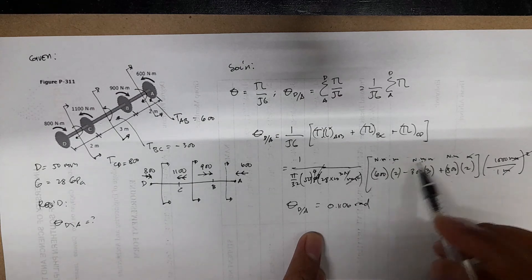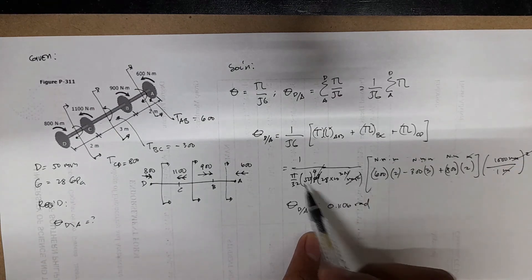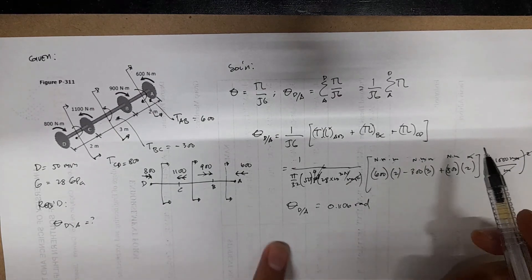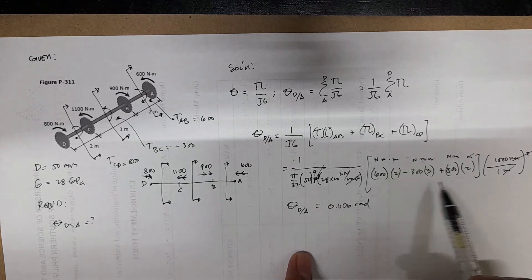And we'll have theta DA, which is equal to 0.1106 radians. So we just have to evaluate this, then convert, and then also evaluate the denominator, and then divide.